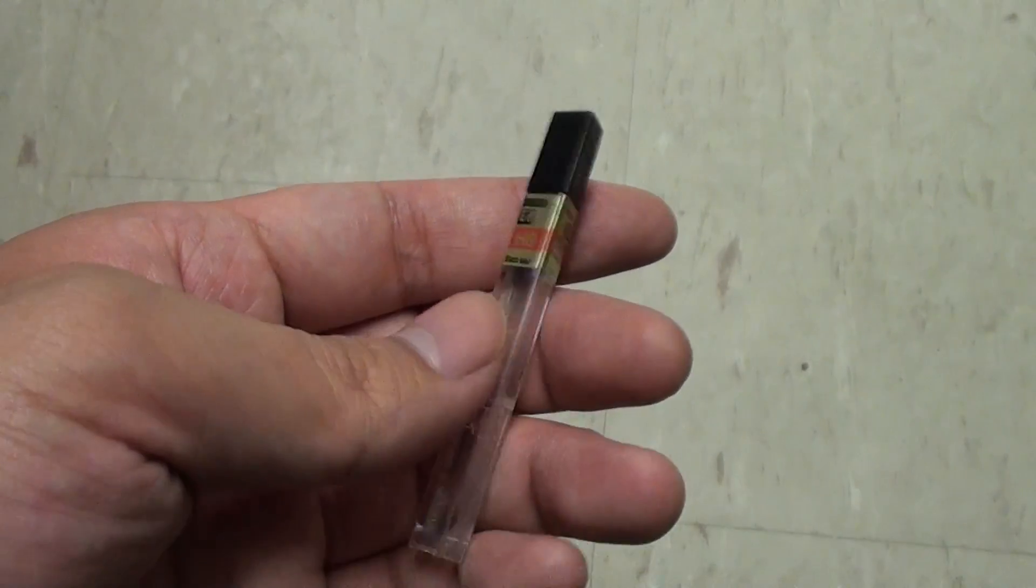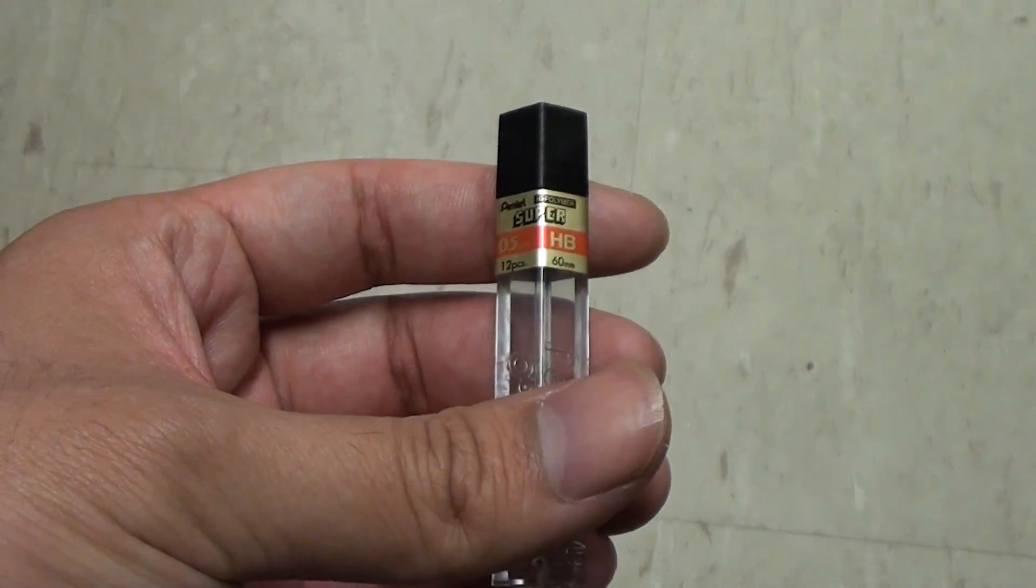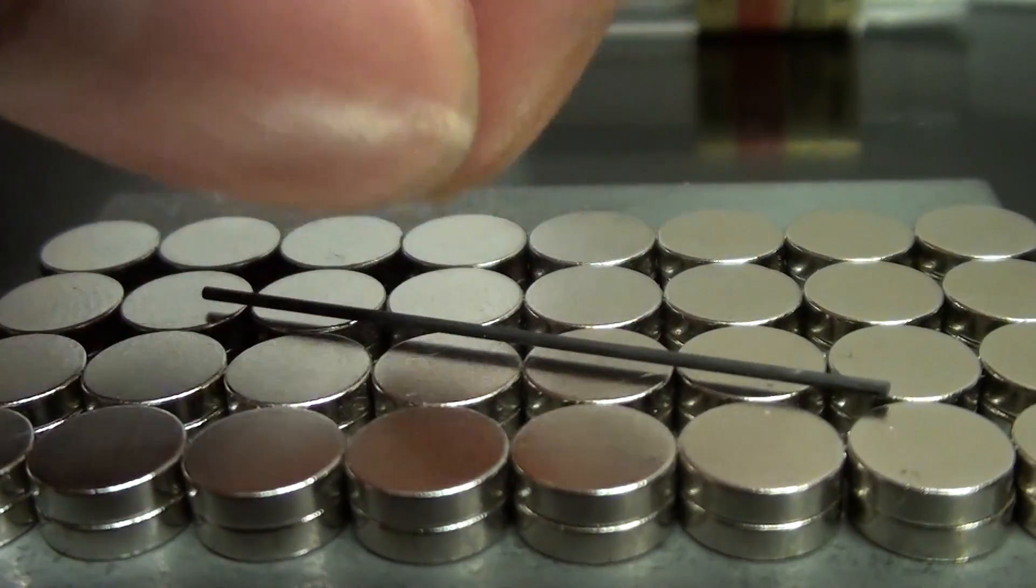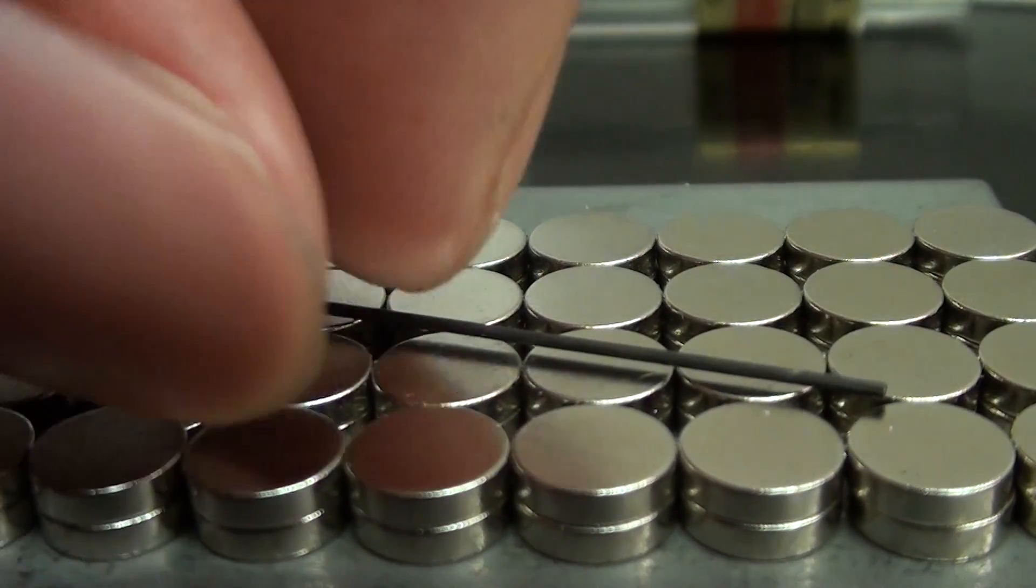As it turns out, some types of pencil lead, which is actually graphite, is also diamagnetic and can be levitated. It's not as strong, but it still works.